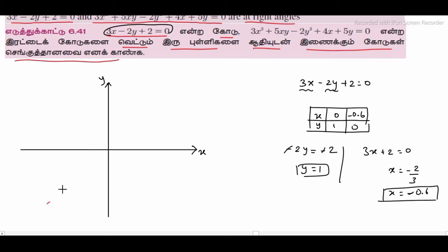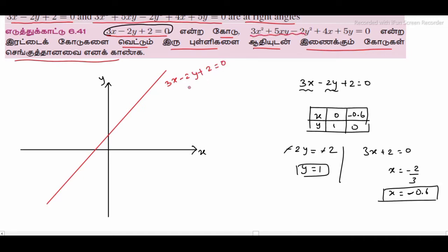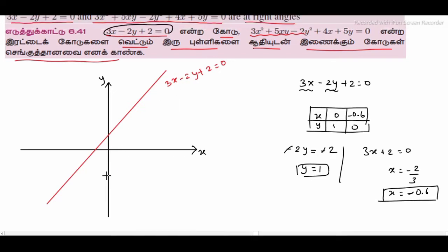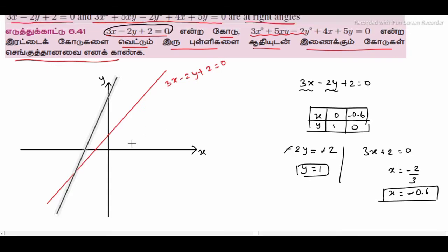In the line 3x minus 2y plus 2 equals 0, here we have two equations — the pair of equations — and one line. One more pair of equations and two lines.